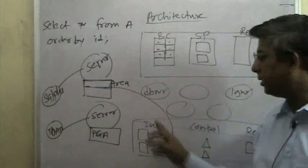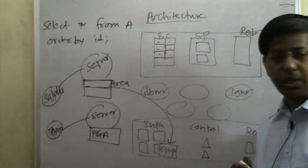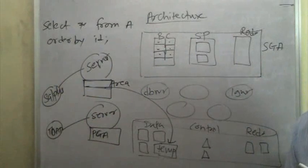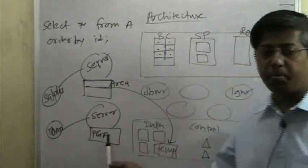So, this is the area, this is the small point that I had missed. So, this is a PGA. Sort area is inside PGA. So, we know what an SGA is. We should now also know what a PGA is.